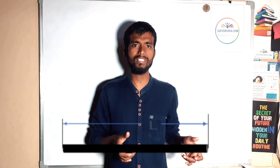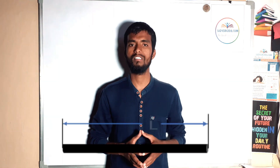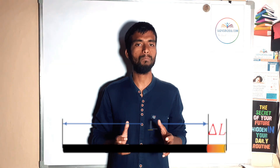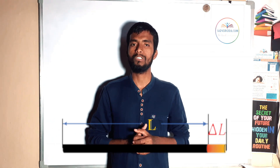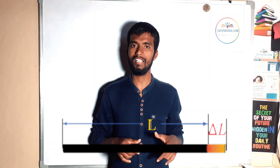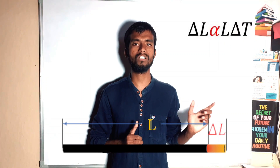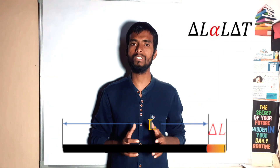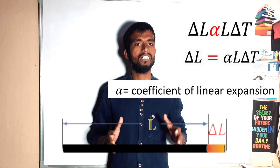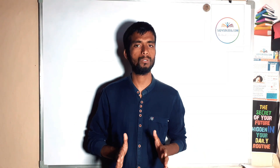To understand linear expansion, let us consider a rod of certain length L. If this rod is subjected to heat, there is an increase in the vibrations of intermolecular atoms, which results in the expansion of the rod. The change in length delta L is proportional to the change in temperature delta T and the original length L. To remove this proportionality, we introduce a constant alpha, which is known as the coefficient of linear expansion.